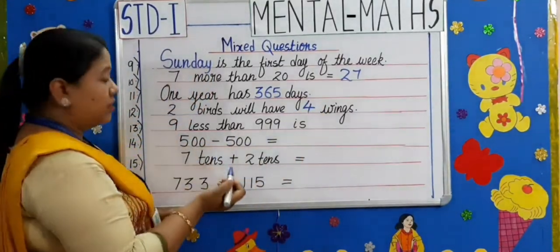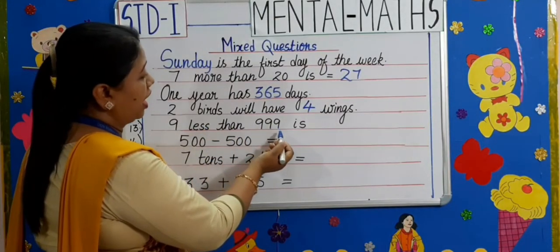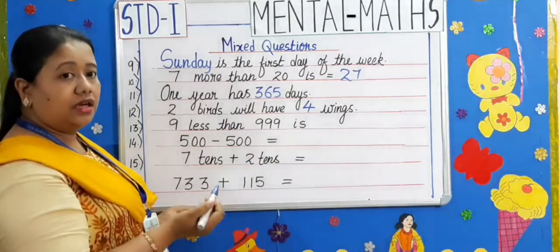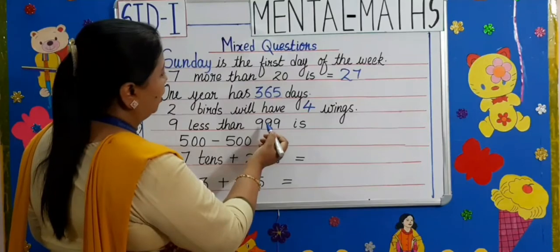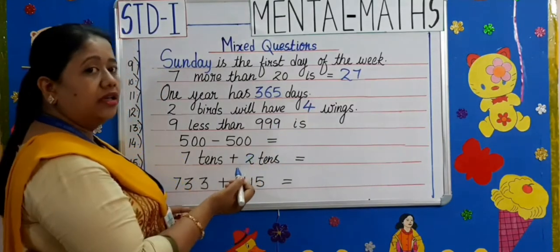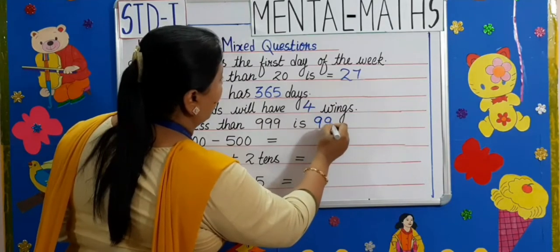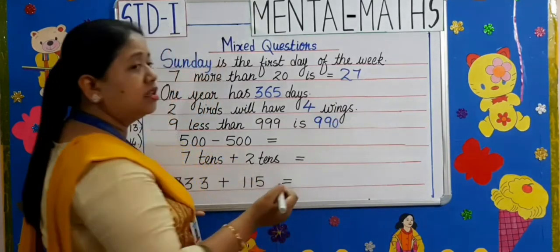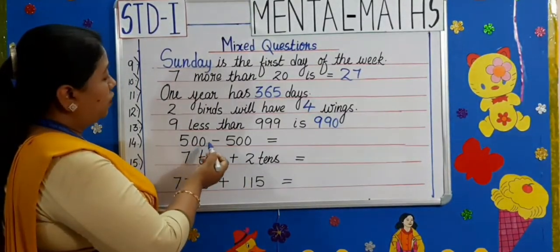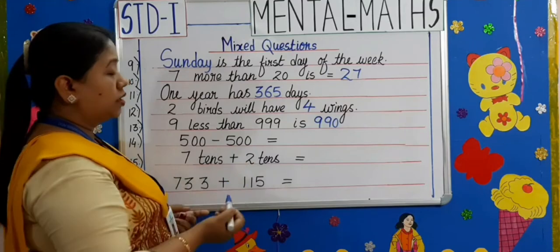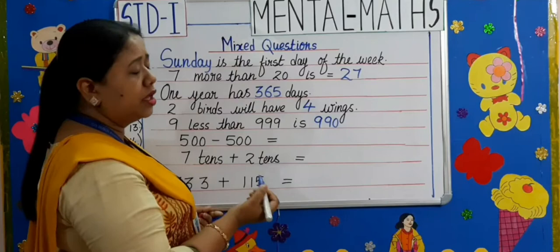Moving on to the next one: nine less than 999 is? Here we have to do subtraction. 999 minus 9 is 990. Next: 500 minus 500. Here we are doing subtraction, so the answer will be 0.